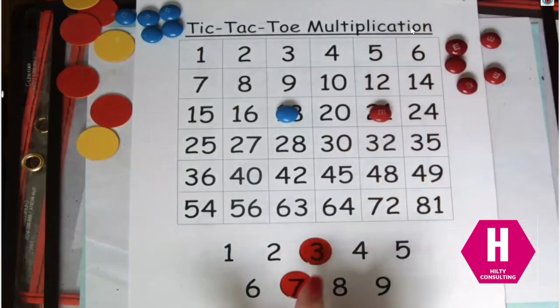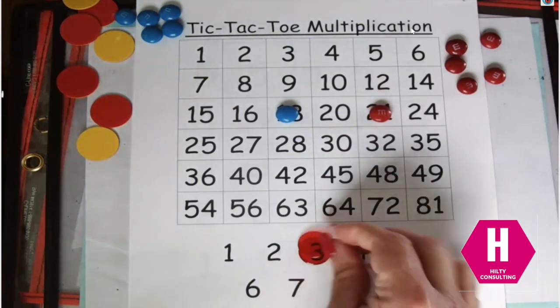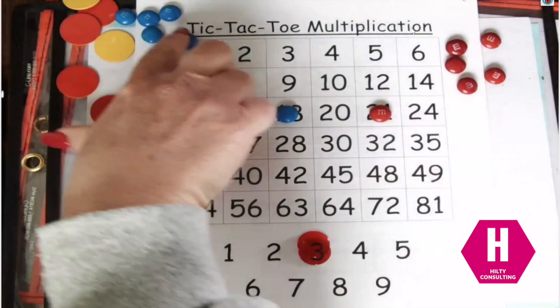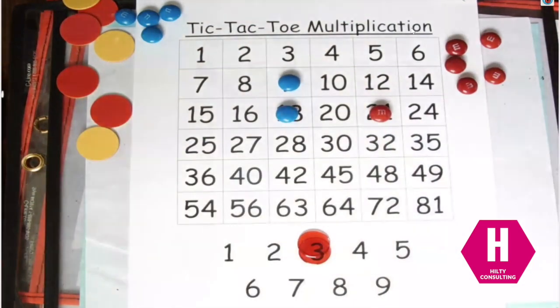Now again, I can only move one of these. So I am going to do three. I'm going to put both of them over top of three. So three times three equals nine and mine goes over top of the nine.